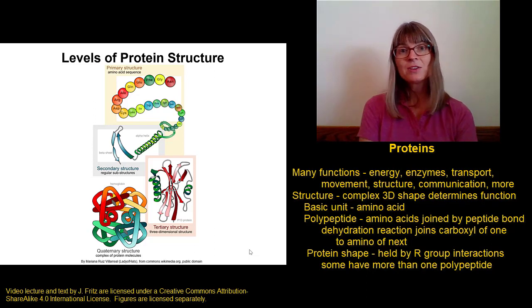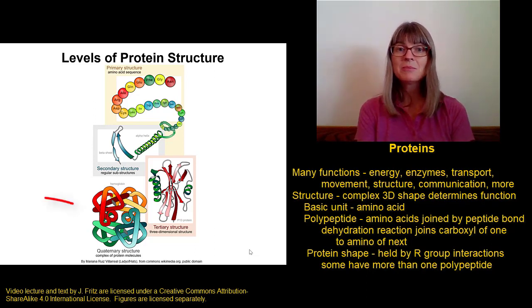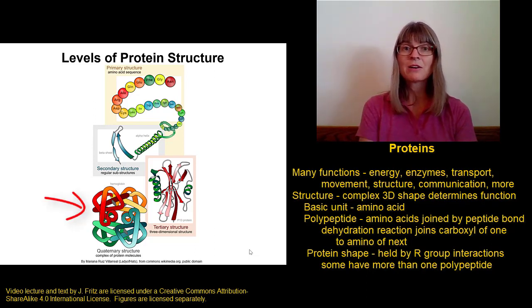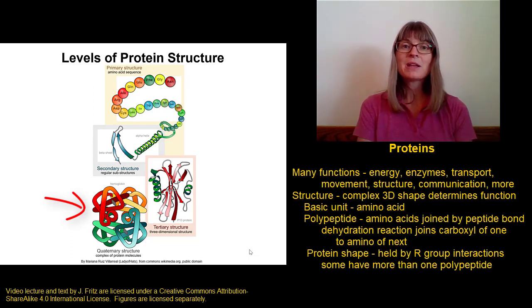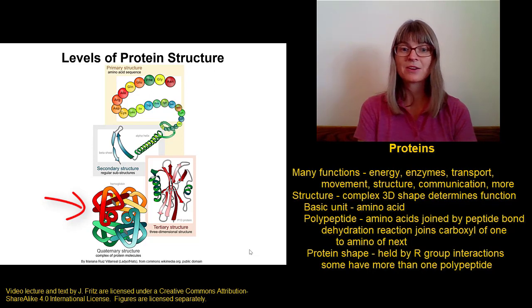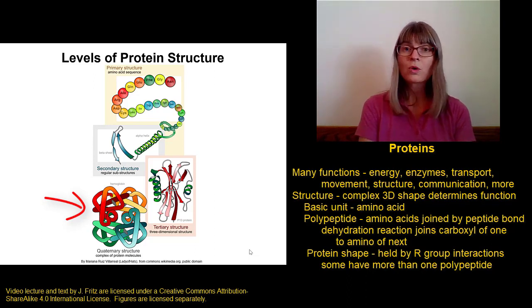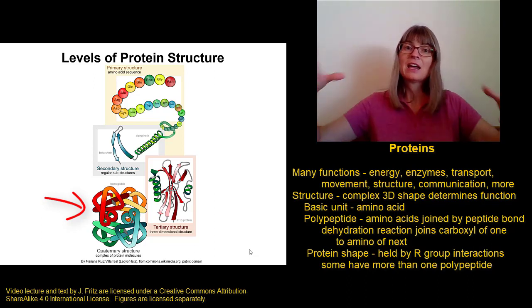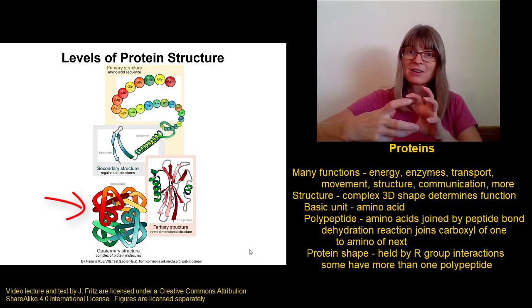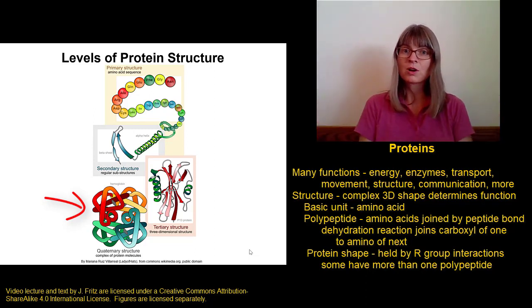The example on your screen is the protein hemoglobin, which is found in our blood and is responsible for carrying oxygen. Hemoglobin is made of four polypeptides joined together. In this drawing, one of them is shown in red, one is orange, one is blue, and one is green. Those four polypeptides are held together to make the fully formed hemoglobin protein.